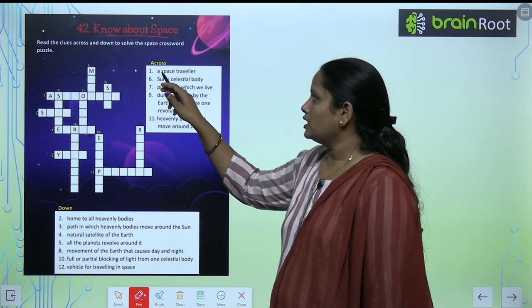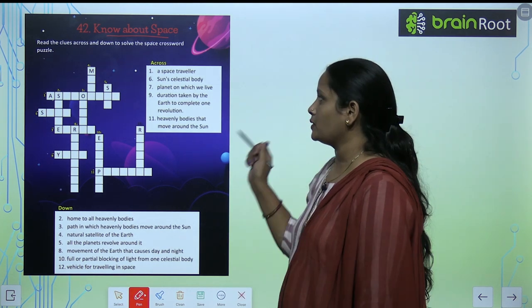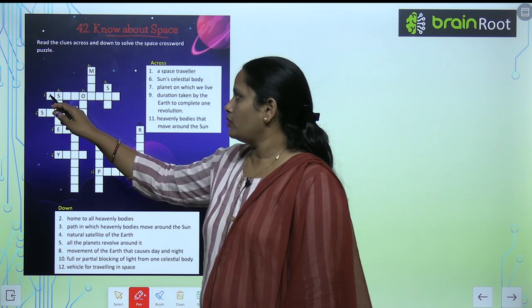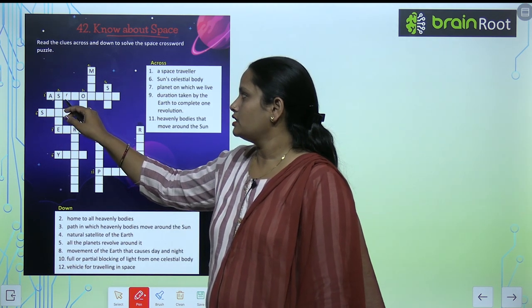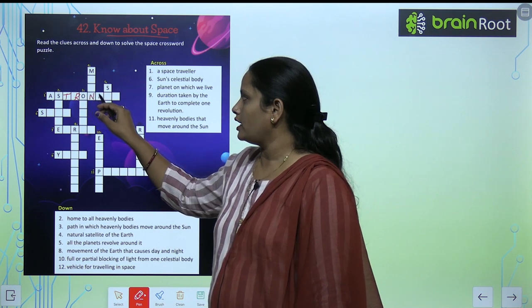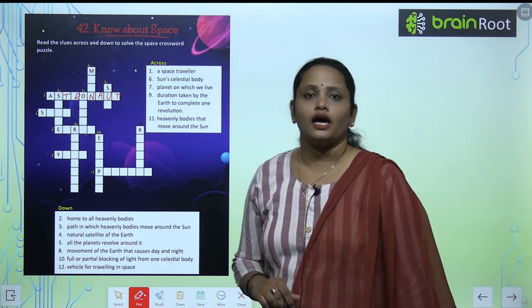So here, the first, let's see what's written here in across: a space traveler. Space traveler ko kya kette hai? In number 1, so here is number 1. It is A-S-T-R-O-N-A-U-T. It is astronaut.